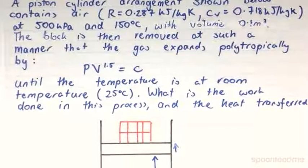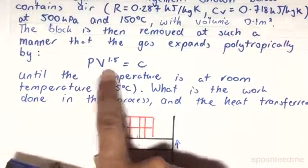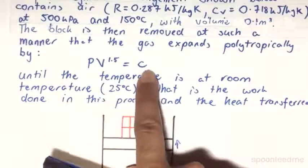Anyway, it's expanded in such a way that the gas expands polytropically, such that the relation PV to the power of 1.5 is going to be a constant.